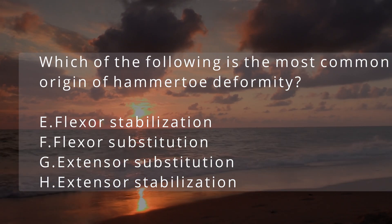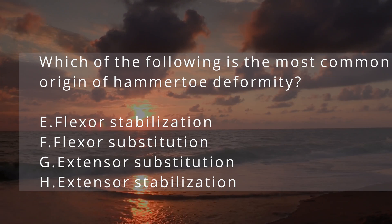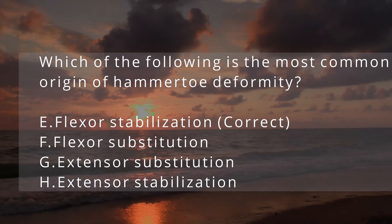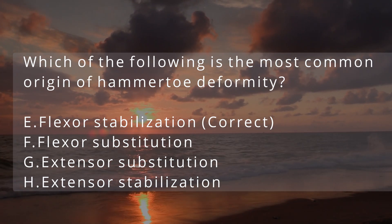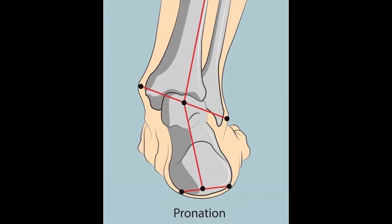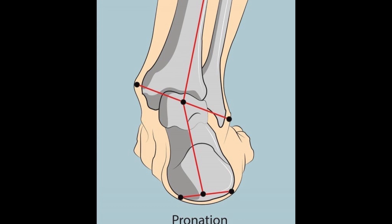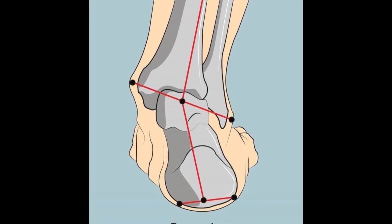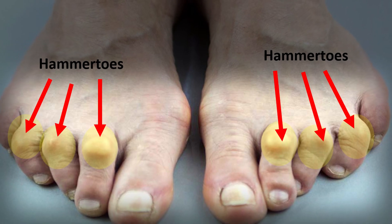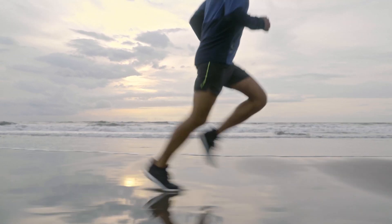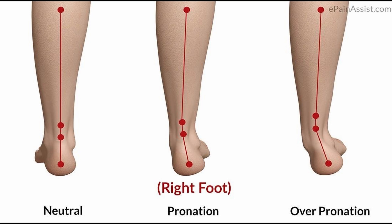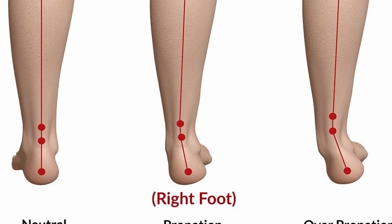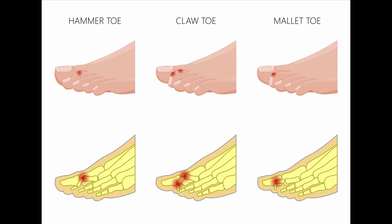Which of the following is the most common origin of hammer toe deformity? The answer is flexor stabilization. Remember that flexor stabilization is almost always seen in the pronated foot, which is a very common deformity. We see excessive gripping, overpowering of the interossei, and this occurs when the posterior muscle group is unable to effectively re-supinate the foot. The foot compensates with the flexor hallucis longus and flexor digitorum longus, which fire earlier and longer and with greater force to re-supinate the foot.